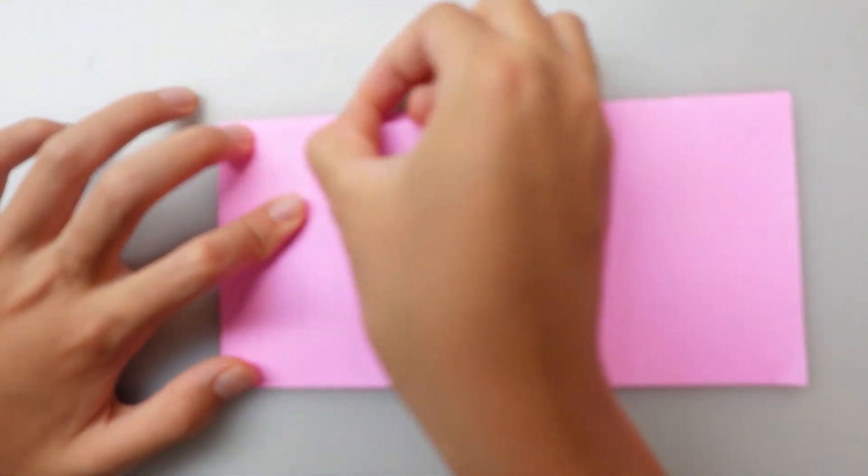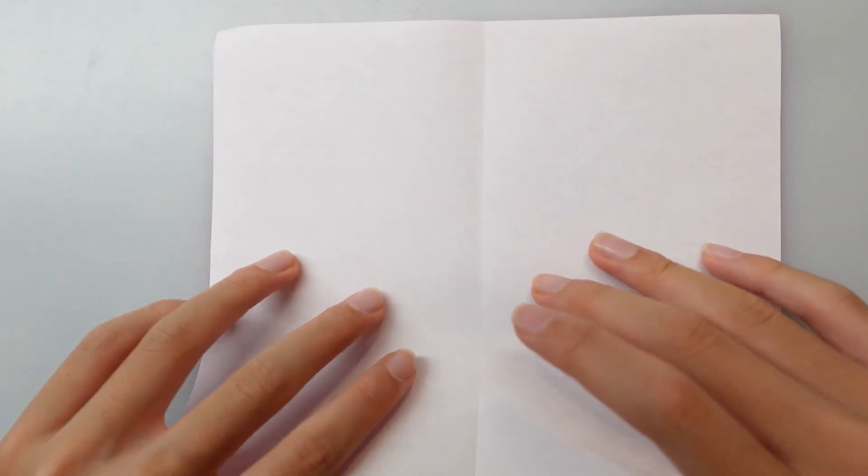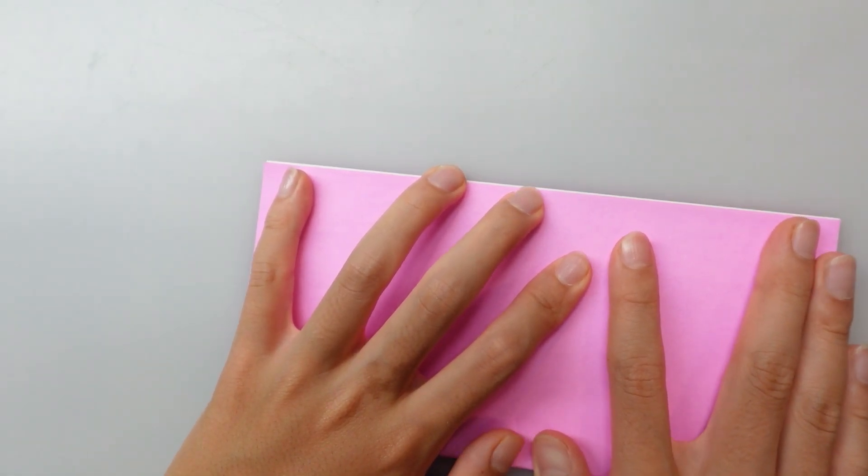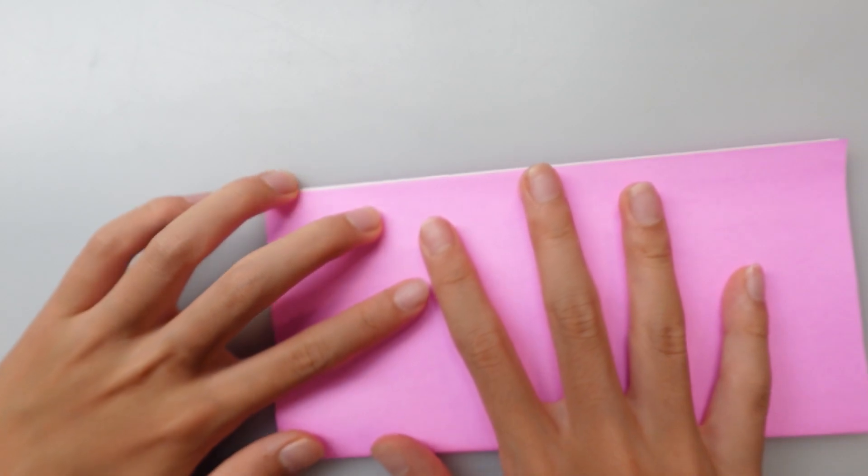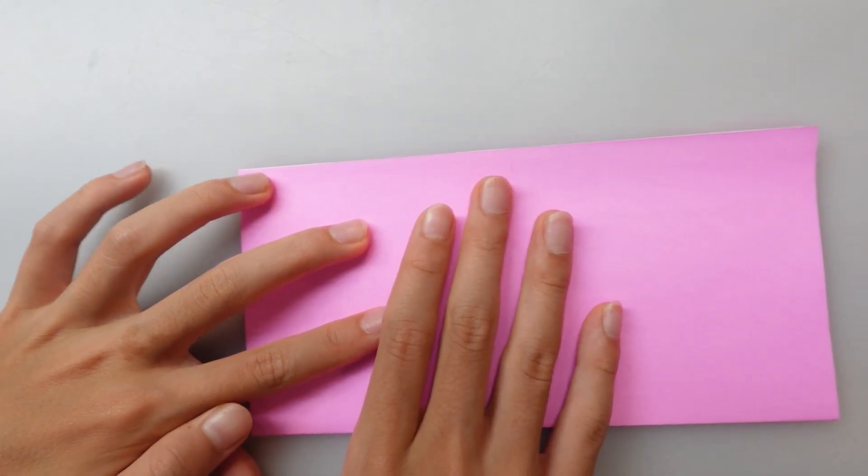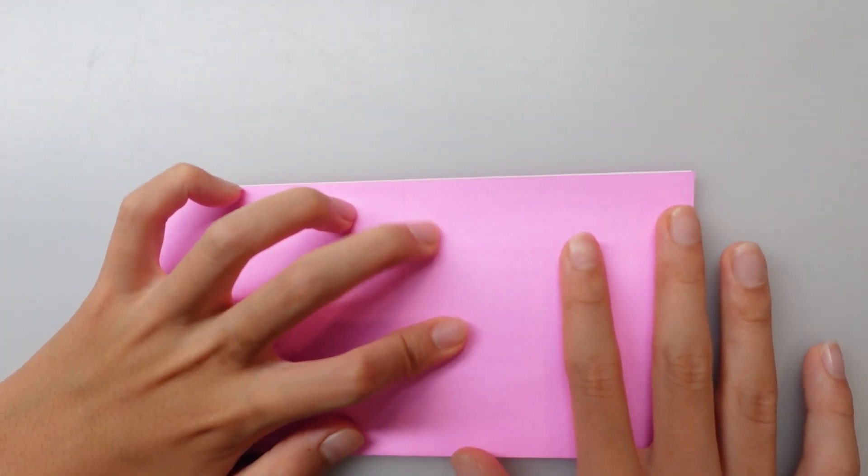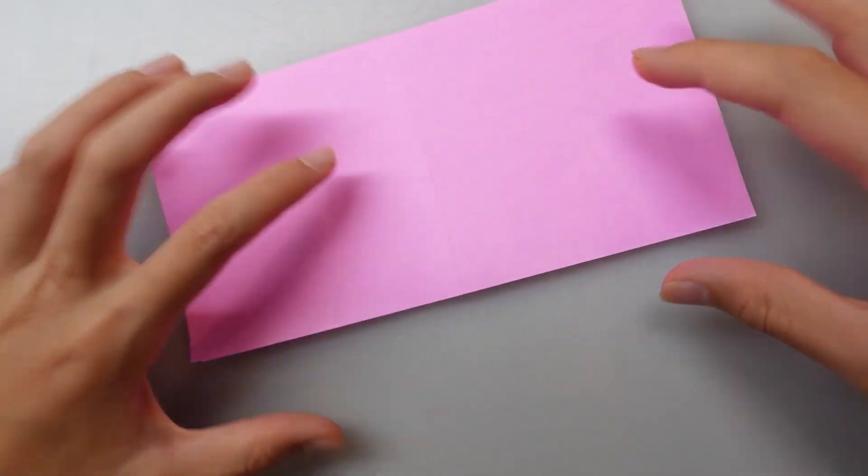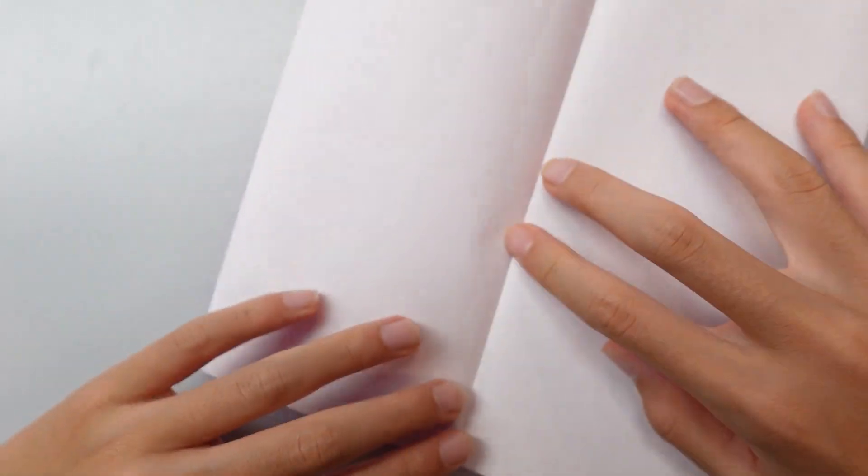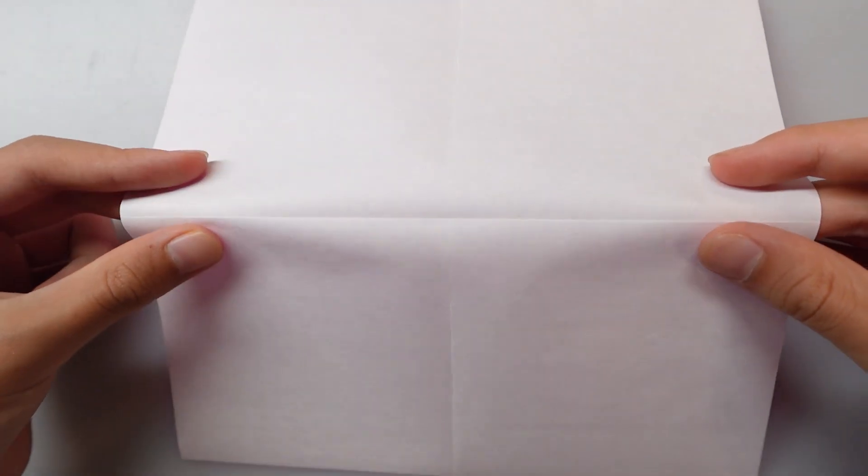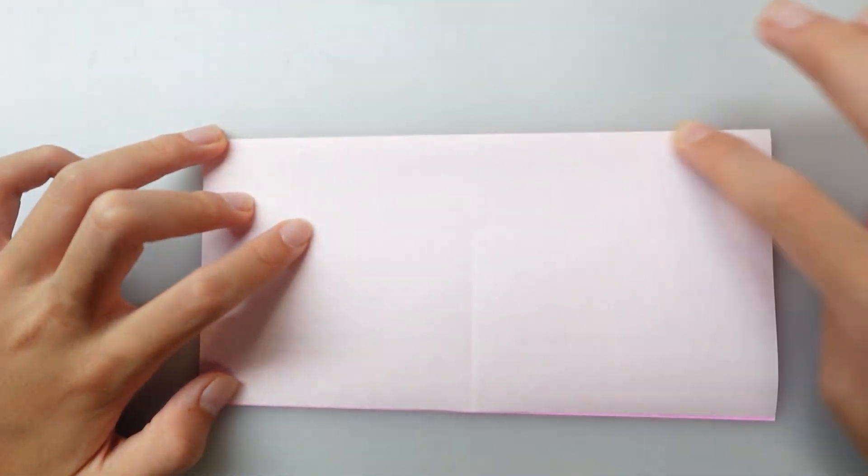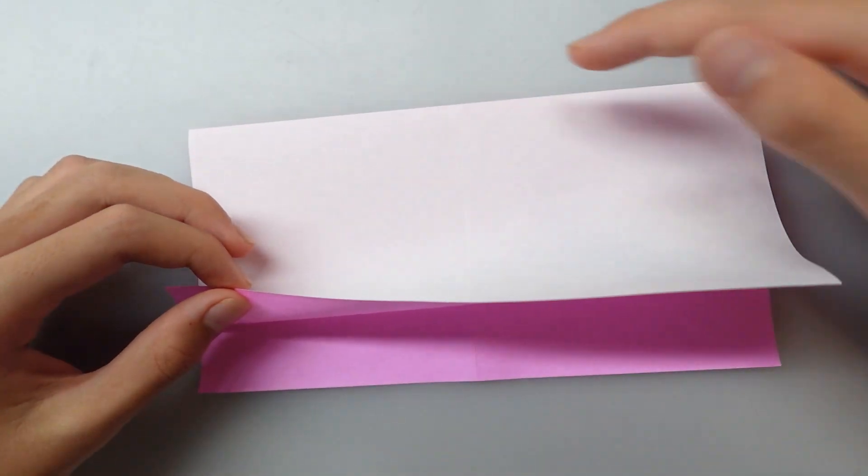Turn over to check. Father's Day is also coming up, so this can be a gift. Let's fold in half this way as well. Now let's reverse this crease. Just like that, and fold the bottom edge to the top.